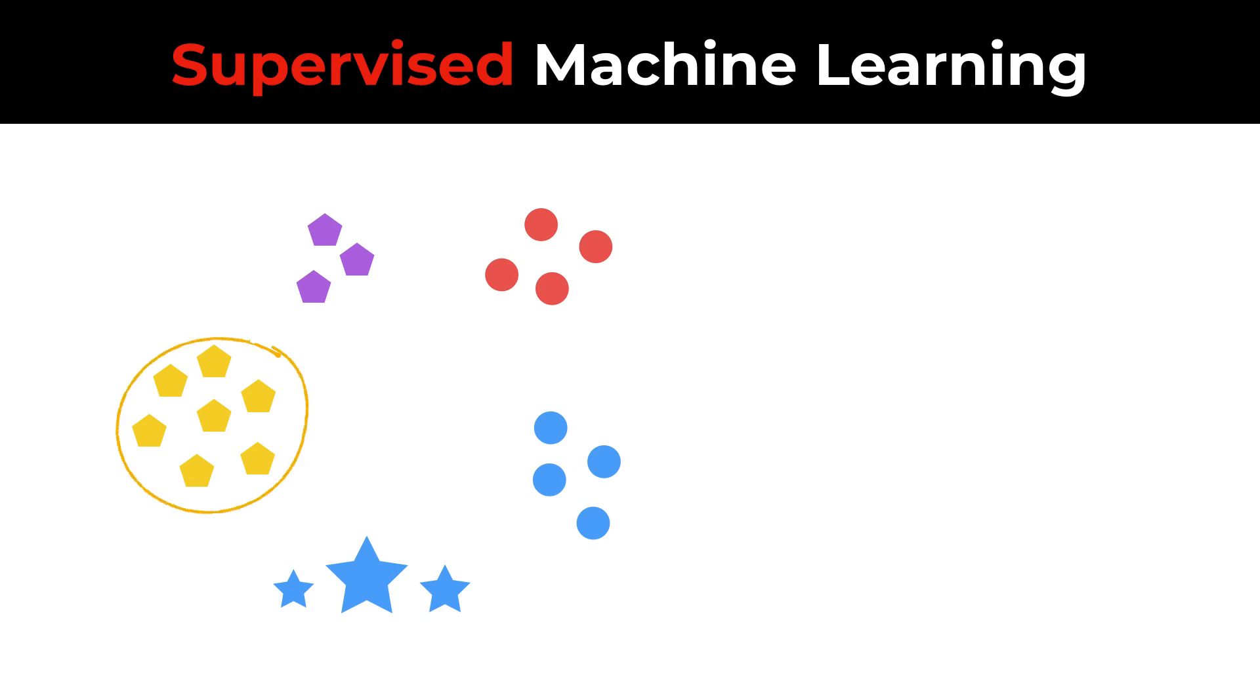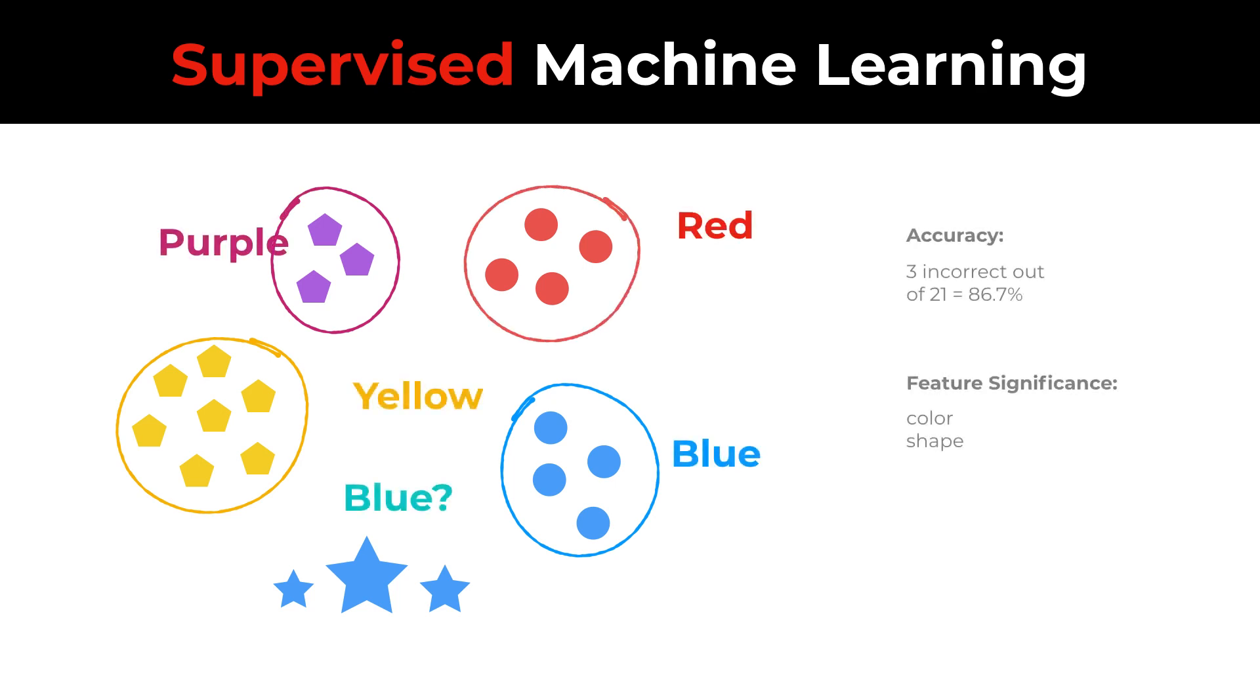The output of classification algorithms include predicted classes for each object, or sample found in the data. Some algorithms, such as random forests, also evaluate how accurate and stable the prediction is.